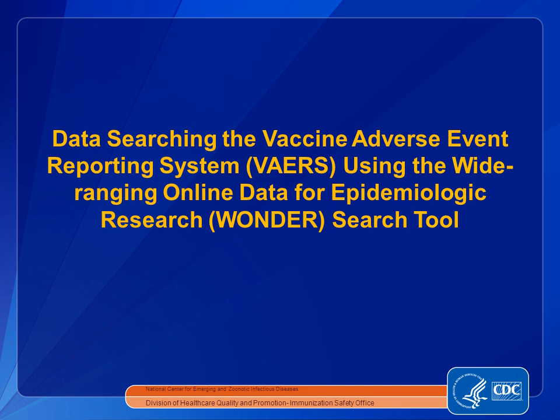Data from the Vaccine Adverse Event Reporting System, or VAERS, is available to the public. This presentation will show you how to search data from this system. In searching VAERS data, you will be able to learn about symptoms, illnesses, and adverse events that have been reported after vaccination. You will also learn about the strengths and weaknesses of the VAERS surveillance system.